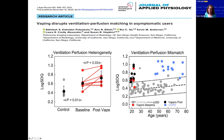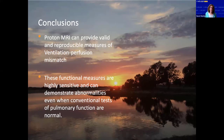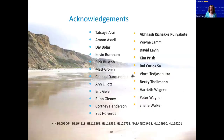Consider what's going to happen to this 22-year-old when he becomes 60 or 70 or 80. He is already markedly impaired. And if you just did spirometry on these guys, you wouldn't know that there was anything unusual. I hope I've convinced you that proton MRI can provide valid and reproducible measures of ventilation-perfusion mismatch. These functional measures are highly sensitive and can measure abnormalities even when conventional tests of pulmonary function are normal. It really takes a village to do these kinds of experiments, and there are a large number of people that have contributed. Thank you for your attention.